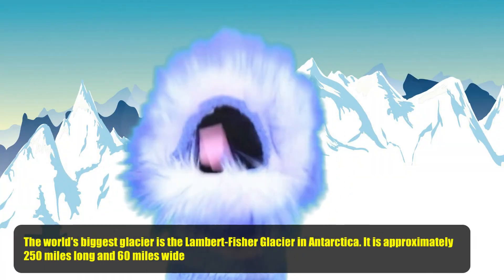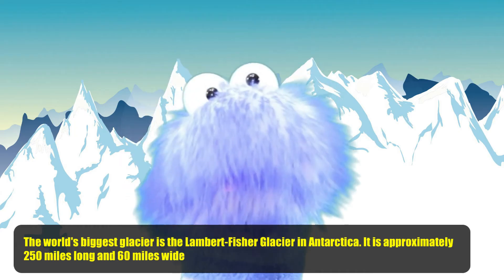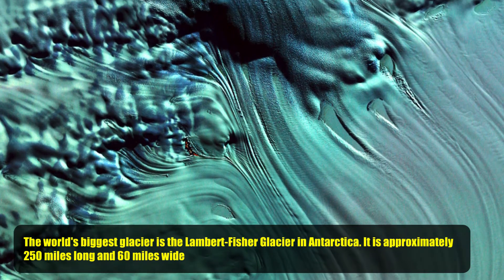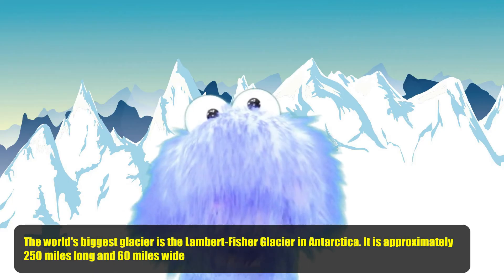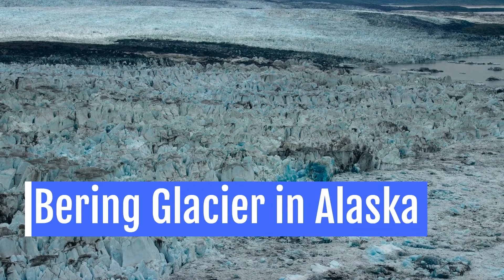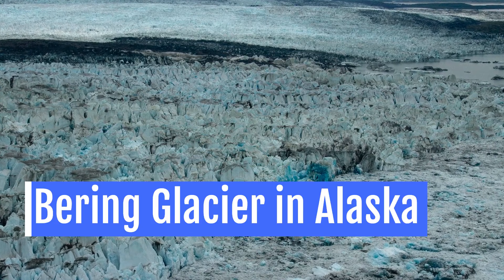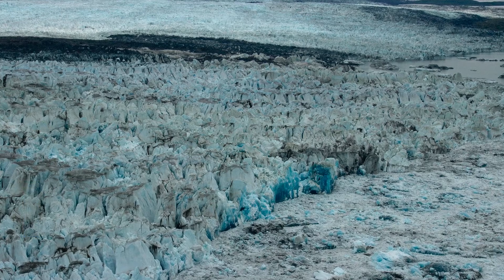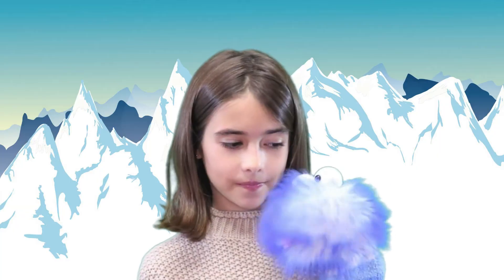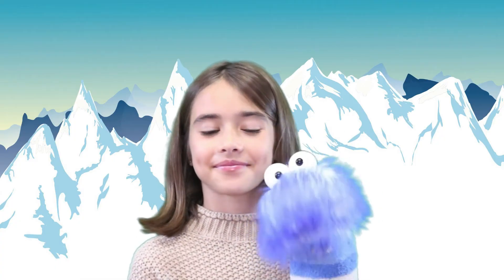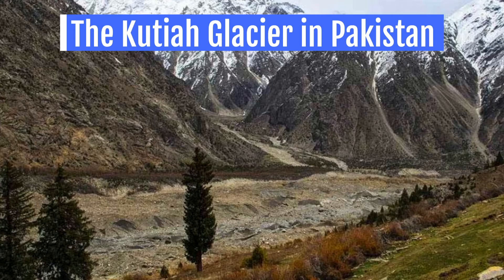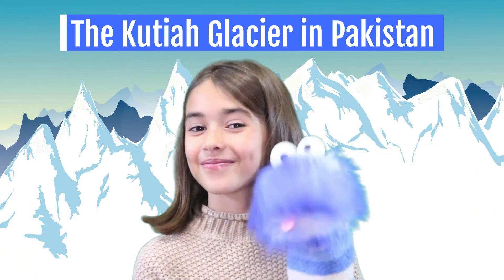Guess what? The world's largest glacier is the Lambert Fisher Glacier in Antarctica. It is approximately 250 miles long and 60 miles wide. And at over 125 miles long, the Bering Glacier in Alaska is the longest glacier in the United States of America. Believe it or not, even tiny glaciers are still the size of a football field. Did you know that even though most glaciers move very slowly, the Kusha Glacier in Pakistan once moved more than seven miles in three months during 1953?